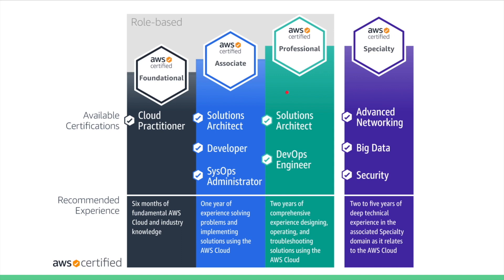There are two professional examinations: the Solution Architect Professional and the DevOps Engineer examination. Apart from these three main pillars, there are also specialty exams — you can obtain a specialty certification in advanced networking, big data, and security. AWS recommends two to five years of deep technical experience in the associated domain for those. Now that we have the basic understanding about the certifications, let's dive into the Certified Solution Architect Associate examination information.